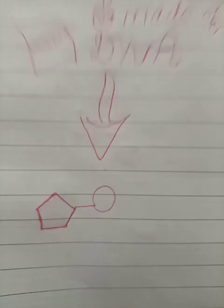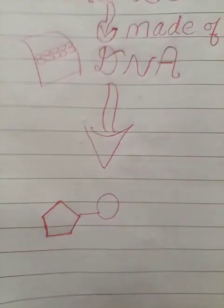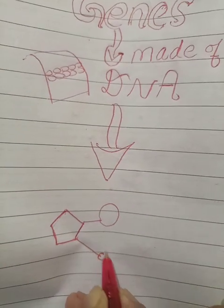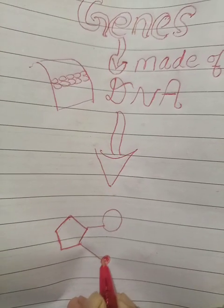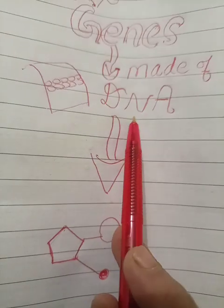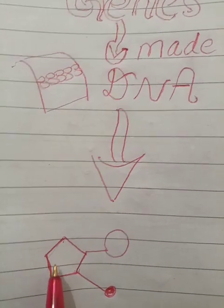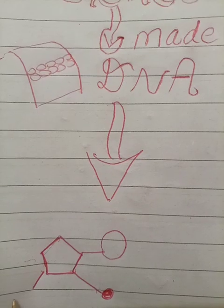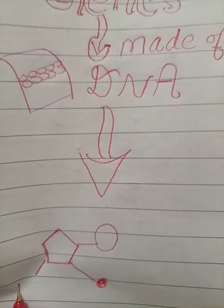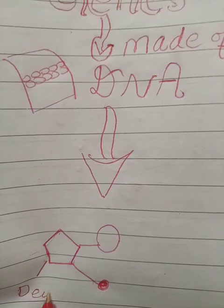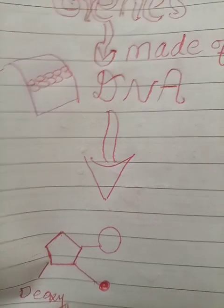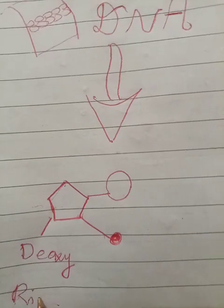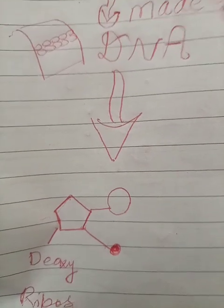So what is this DNA made up of? DNA is made up of three units. Number one is deoxyribose sugar.